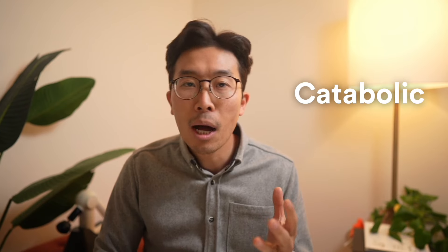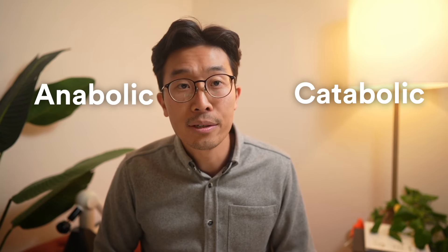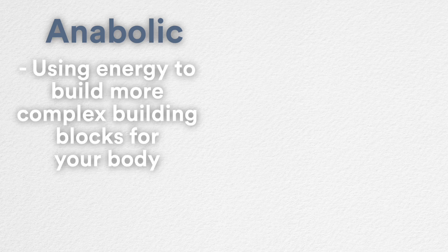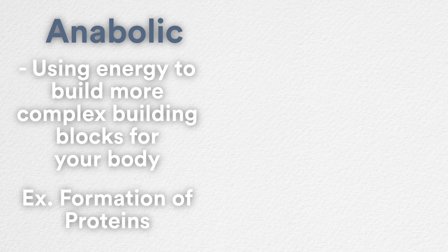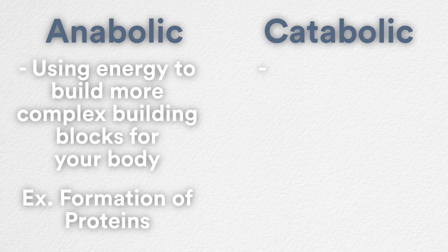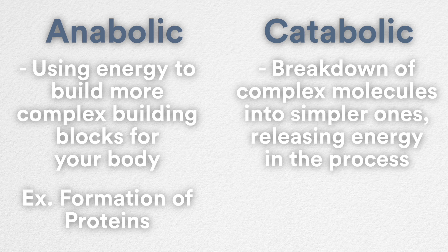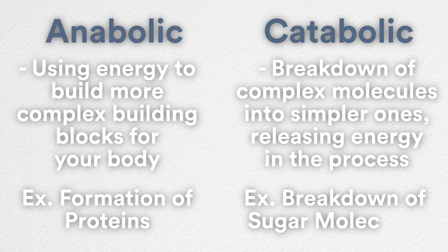To drill down a little bit deeper, metabolism is in a constant dynamic balance between catabolic and anabolic processes. Anabolic processes involve using energy to build more complex building blocks for your body — for example, the formation of proteins from amino acids and the formation of new cells. Catabolic processes involve the breakdown of complex molecules into simpler ones, releasing energy in the process — for example, the breakdown of sugar molecules to produce energy for your body to use.